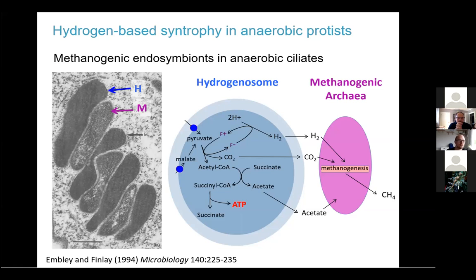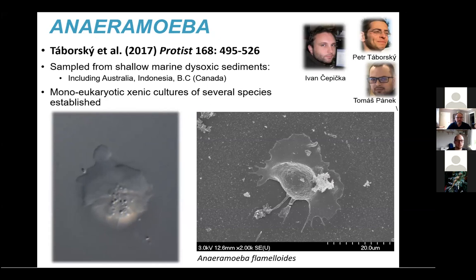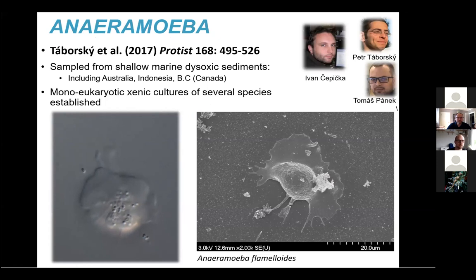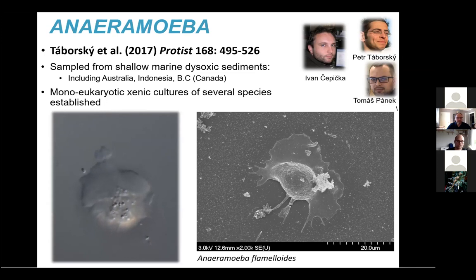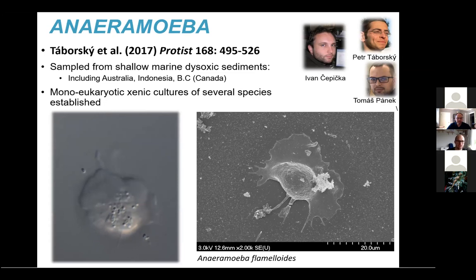Aneroamoeba is a newly described lineage of organisms first isolated and described in the lab of Ivan Kepitschka by Peter Tampowski and Tomasz Panek. These organisms were sampled from shallow marine sediments across the world, and they were able to establish mono-eukaryotic xenic cultures of two species and a couple of isolates of one species. These are amoebo-flagellates, though the flagellate form has only rarely been observed in culture.